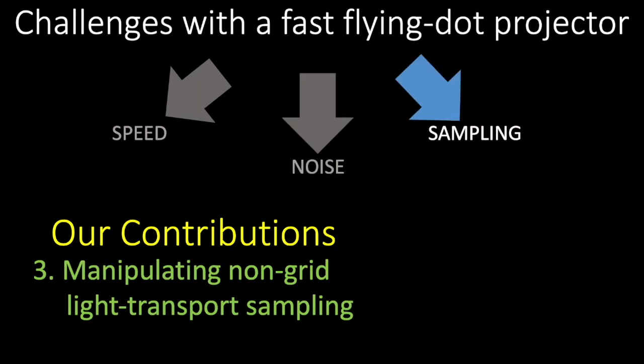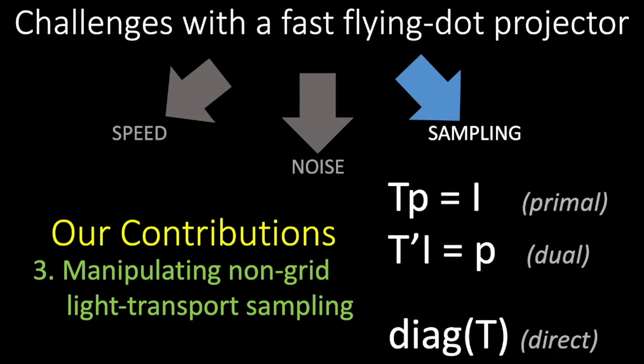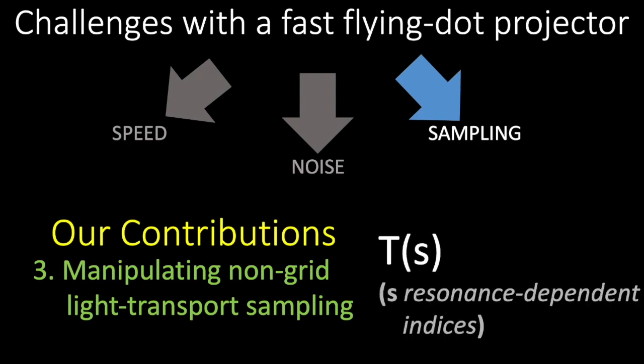Our third contribution deals with the non-uniform sampling of the virtual projector. Traditional light transport processing enjoyed elegant solutions to applications such as transposing to obtain dual imagery and diagonalization to recover direct components. In our paper, we detail how to extract these effects using algorithms that do not require grid-like transport sampling.